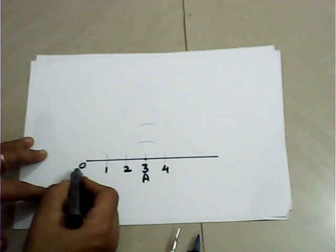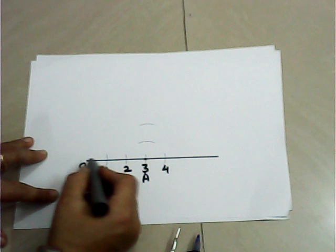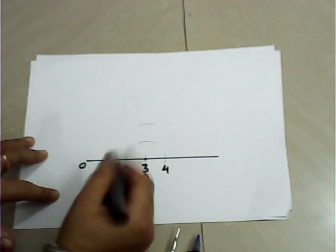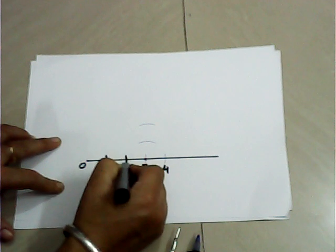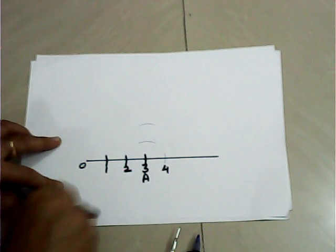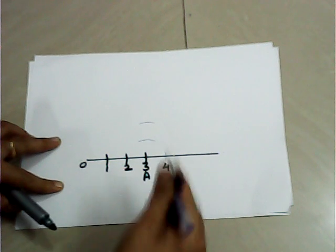Name it point A. Now we have to take base equal to 3 units. This is 1, 2, and 3 units. At point 3, name it A.